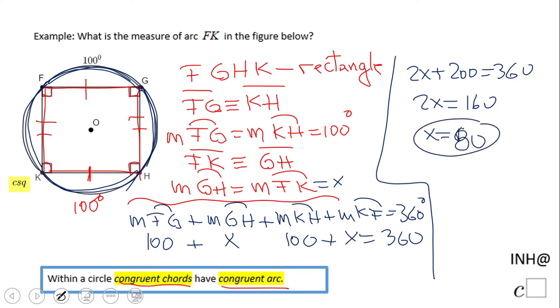Which means the measure of arc FK is 80. And that's it. If you enjoyed this, don't forget to click the like button and come back to C Square for more help. Thank you.